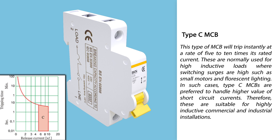Type C MCBs will trip instantly at five to ten times their rated current. These are normally used for high inductive loads where switching surges are high, such as small motors and fluorescent lighting. Type C is preferred to handle higher values of short circuit currents, making it suitable for highly inductive commercial and industrial installations.